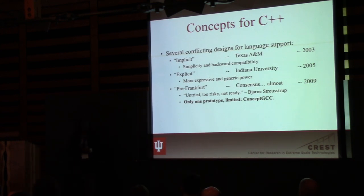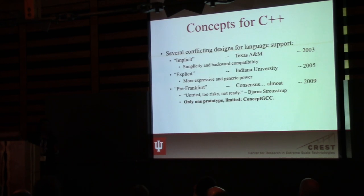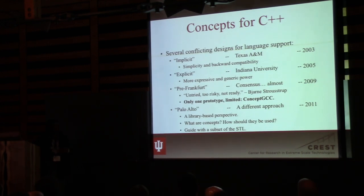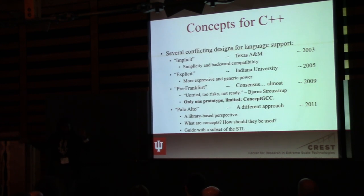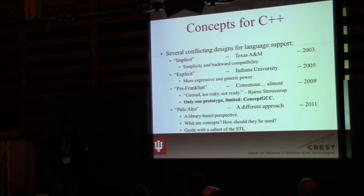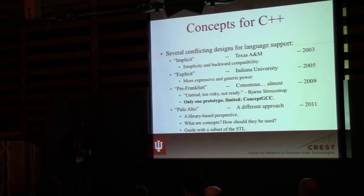The implicit concepts were championed by people from Texas A&M, and the explicit ones were championed by people from my group — Jeremiah, Jeremy Sieg, Jaco, Ron Garcia, and others. Eventually it became apparent we needed to reach a consensus. In 2009, we almost had it until we didn't — we didn't have enough information to proceed with confidence. In 2011, we started revisiting the design from a different perspective. Some of us went to Palo Alto with Andrew Sutton, Biane, Sean Parent, Alex Stepanov, and others.